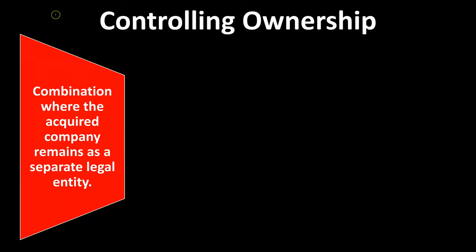The other type of format is a controlling ownership — a combination where the acquired company remains as a separate legal entity. Two separate legal entities are combining together, but they are not being merged. The bigger company is not completely consuming the other company, but they are going to have a controlling interest in it. Typically, the larger company has a controlling interest of the smaller company, resulting in a parent-subsidiary relationship.